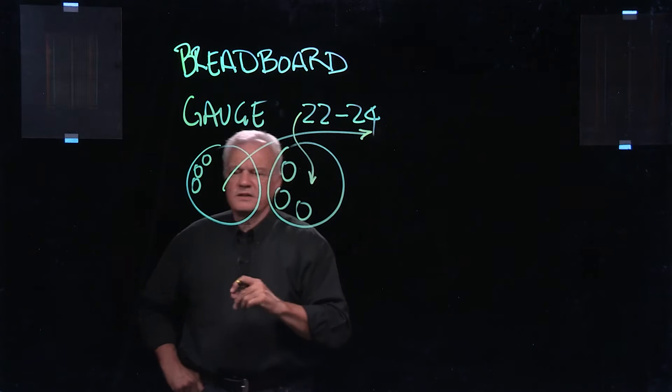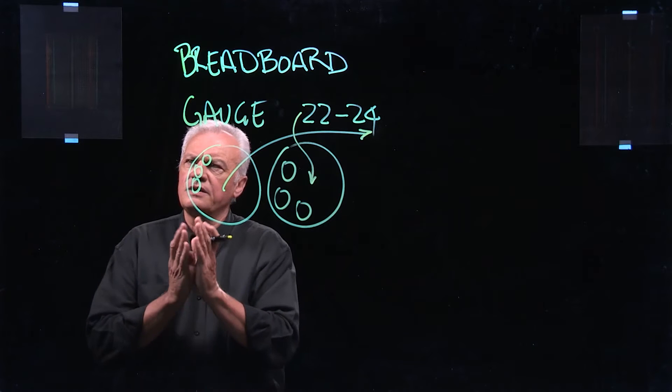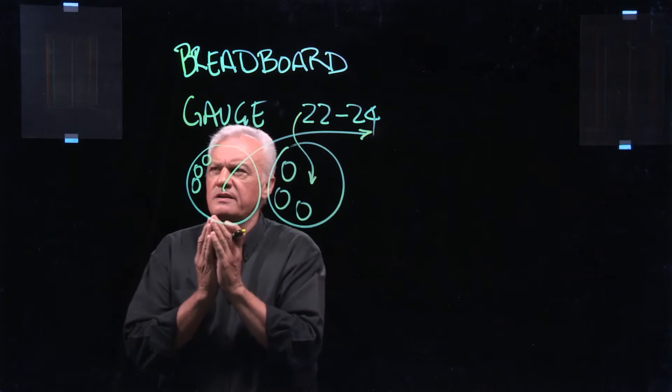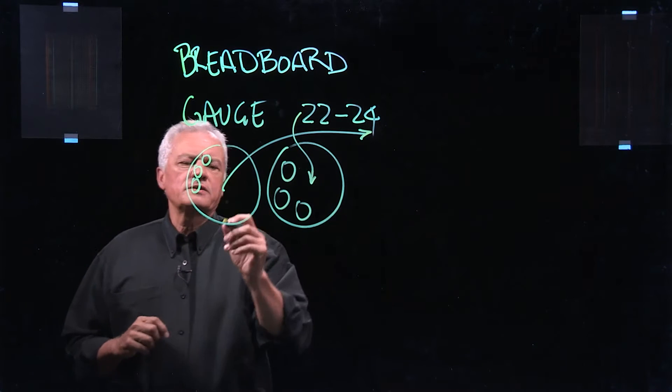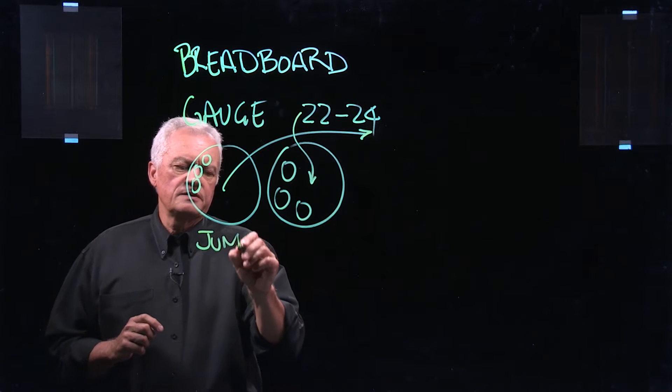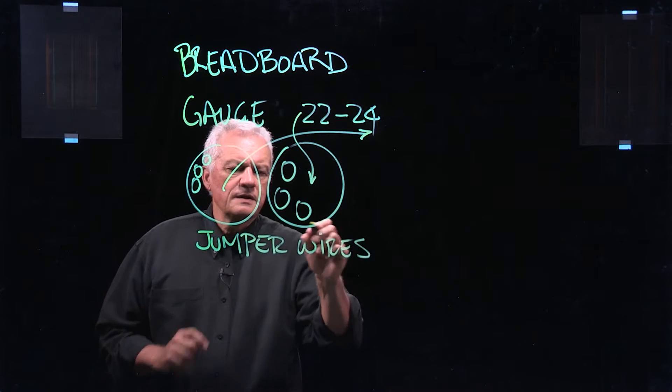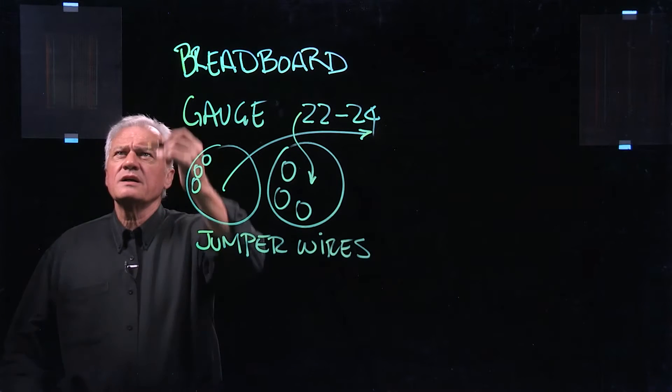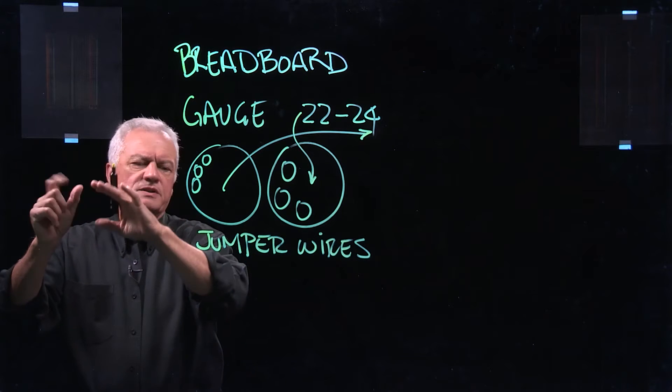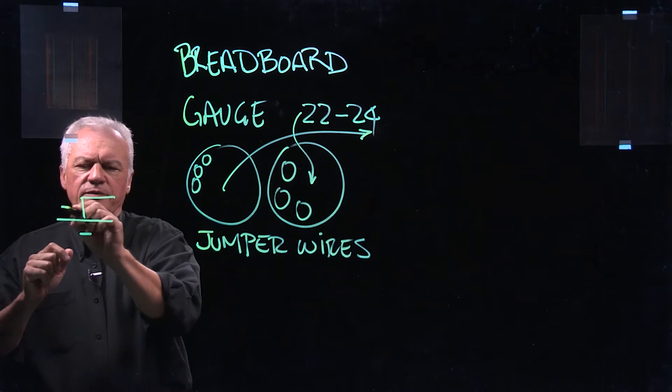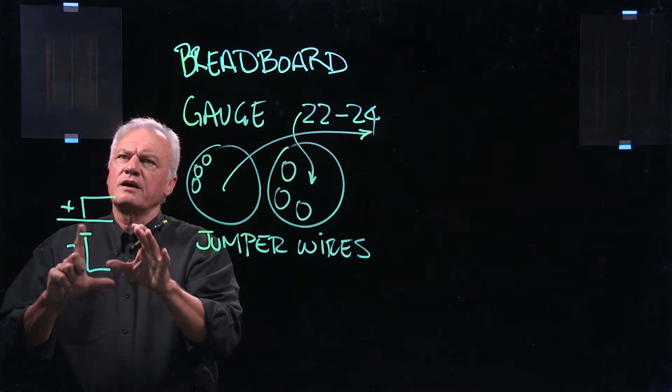This breadboard manages, in the early days, 24 gauge wire. As the springs that hold the wire in these holes loosen, then you tend to use a little larger wire. These wires are jumper wires that you will use to interconnect your circuit. So if we look at this breadboard, a couple of things you should notice. You notice that it's labeled. There is a plus and a minus, which is the same as in a battery. We have a plus terminal and we have a minus terminal. They're trying to show the polarity of the bus.